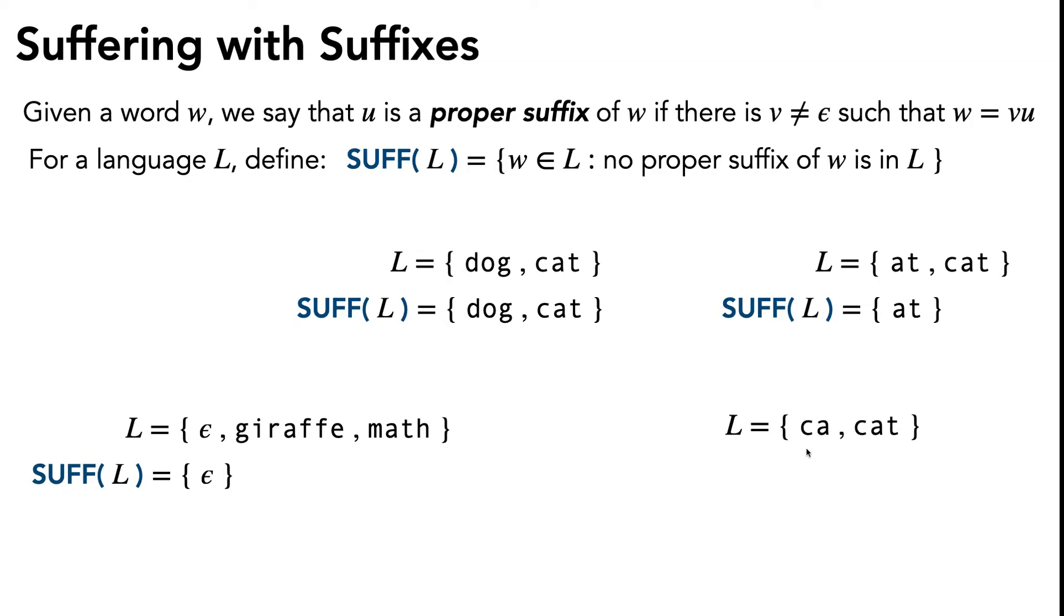How about if L equals {c, a, cat}? Well then SUFF(L) would also equal {c, a, cat}. This is because a proper suffix importantly starts at the end of the word, so any substring or prefix doesn't work. It has to be a suffix in order to eliminate a string from being in SUFF(L).